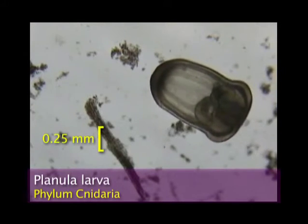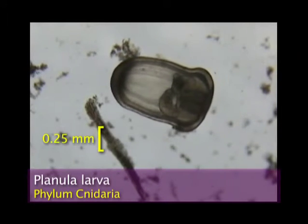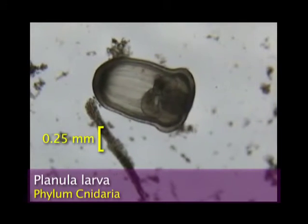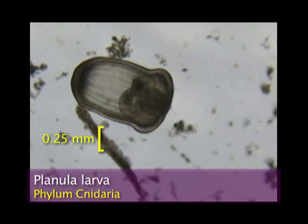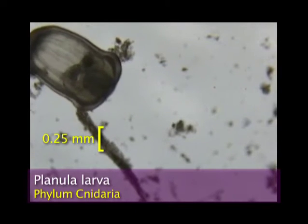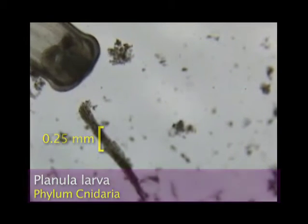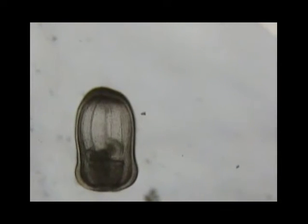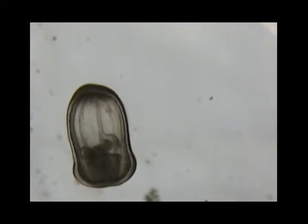The larvae of coral and sea anemones have a characteristic larval form called the planula. When the planula finally settles out of the plankton and attaches to a hard substrate, tentacles develop from the top end and the polyp body will form.